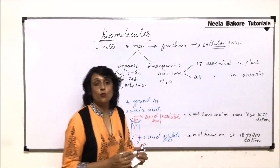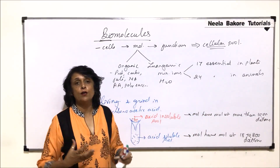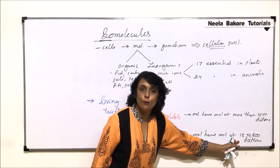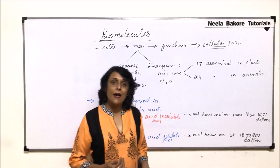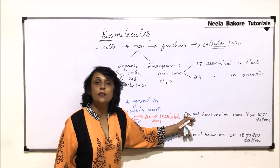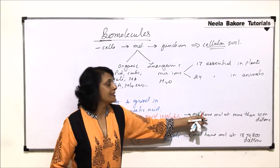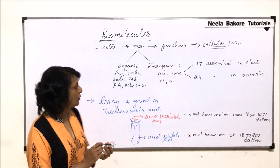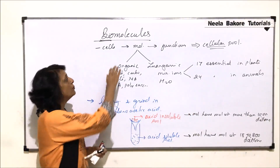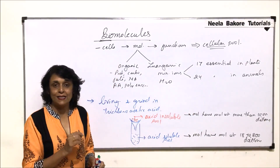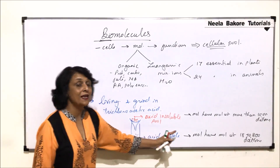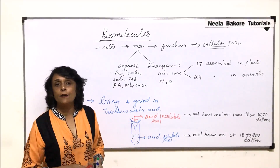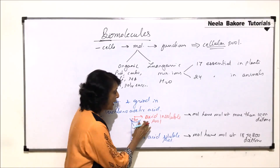Based on this difference in molecular weight, molecules are classified into two categories. Those with a lesser molecular weight are called micromolecules (biomicromolecules), and those with molecular weight of 10,000 daltons and above are called macromolecules (biomacromolecules). This classification is based on molecular weight.